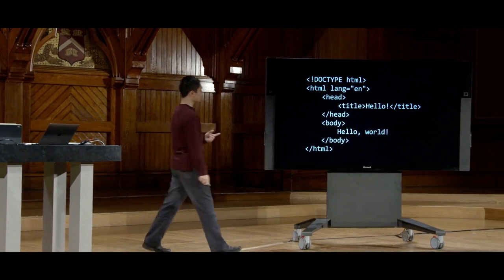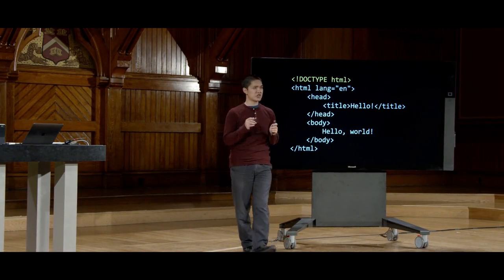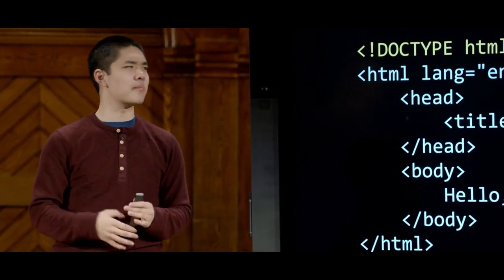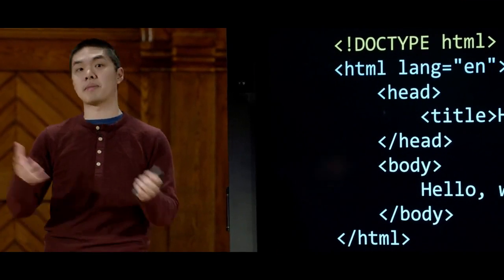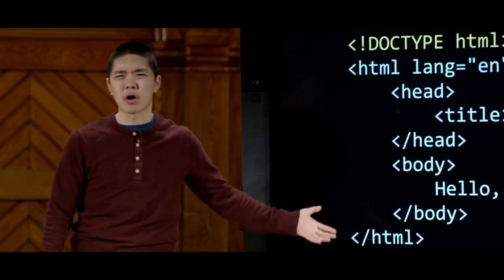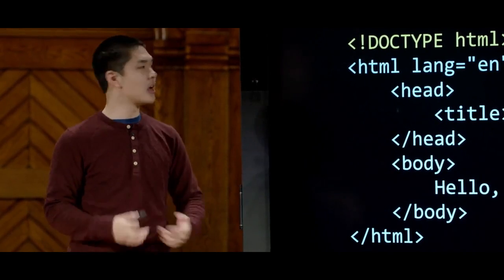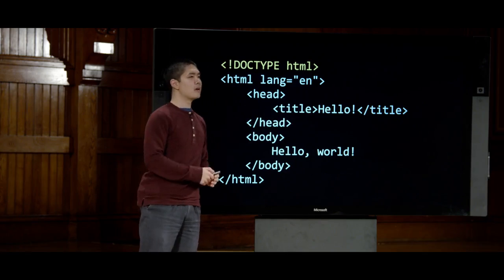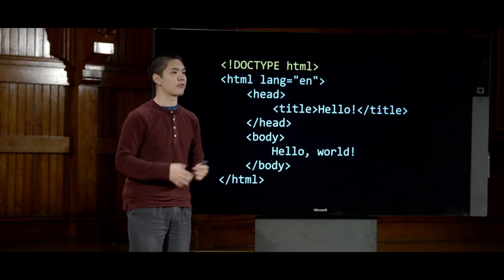Opening hello.html in a web browser, we see 'hello world' in the body and the title 'hello' in the browser's title bar. Now let's explore in more detail how this program works. This very first line, DOCTYPE HTML, is what we call a DOCTYPE declaration — a way of telling the web browser what version of HTML we're using. This line, DOCTYPE HTML, indicates that this page is written using HTML5, the latest version of HTML.